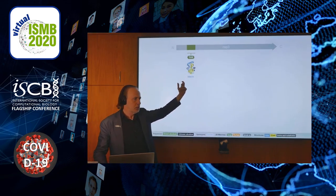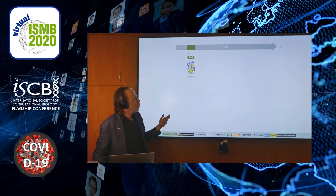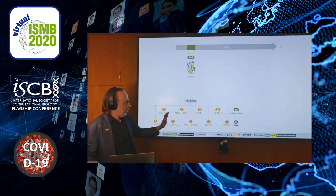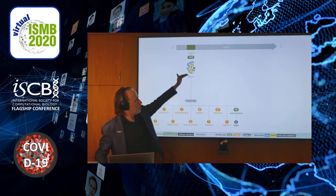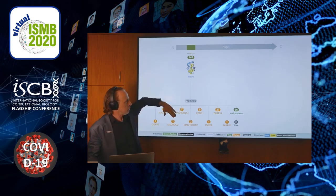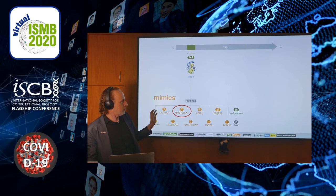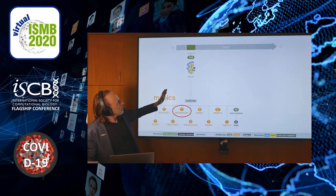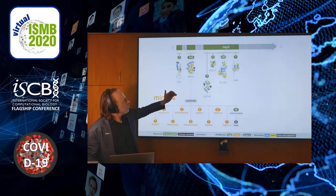For the macrodomain, amongst the 144 matches, some match to host proteins, including human proteins. Whenever that happens, we draw a graph connected to that region and indicate the human proteins that are being matched. A way to interpret this graph is to say that the macrodomain may mimic each of these proteins.